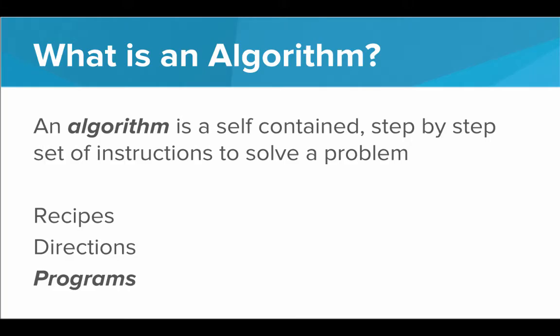We see algorithms everywhere, not just in computers. A recipe is an algorithm — it shows you step-by-step instructions for how to bake a dish. Directions to a location, that's an algorithm — you give step-by-step instructions on how to get somewhere. And programs are another example of algorithms. All programs are implementing algorithms.